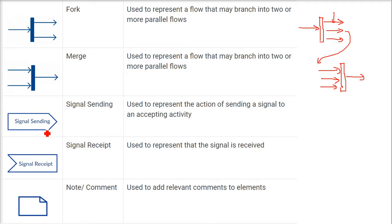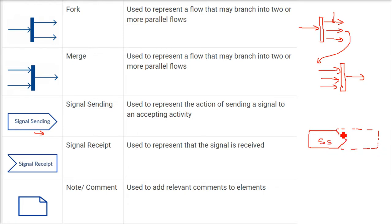Then we have signal sending — a specific arrow shape used to represent the action of sending a signal to an accepting activity. Signal receipt means the signal is received. If you combine them together, one part is signal sending and the other is signal receipt. It's also always required to write a comment or note, represented by a folded rectangle, used to add metadata or relevant comments to elements.